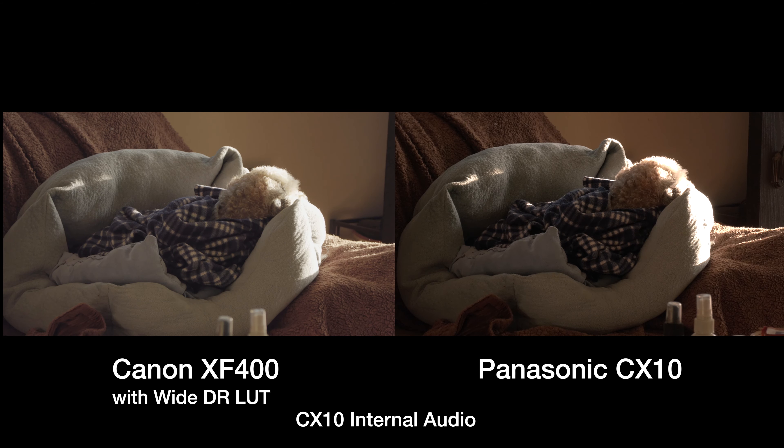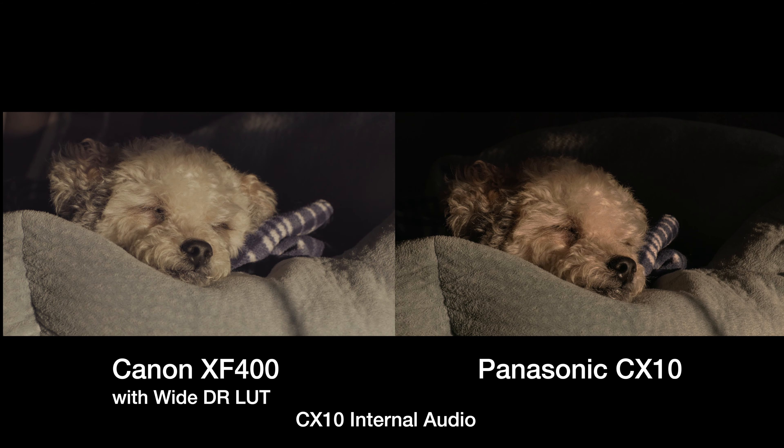Alright, now I'm recording on both of these cameras. I am testing the settings. I'm at 30p at 160 megabits on the Canon and 150 megabits on the Panasonic. The Panasonic has 422 10-bit. I'm shooting in Cine D on the Panasonic, and on the Canon I'm shooting in YDR. I'm not shooting in log, though — I'll switch to log in a little bit.